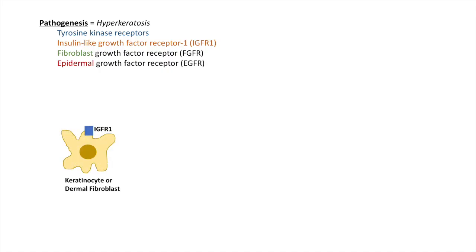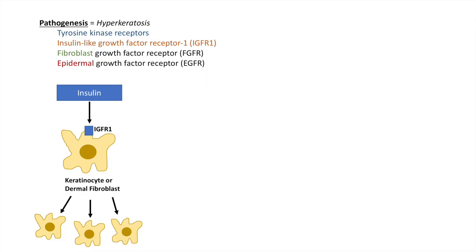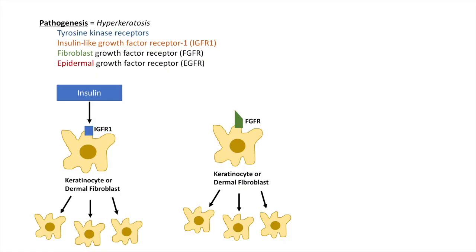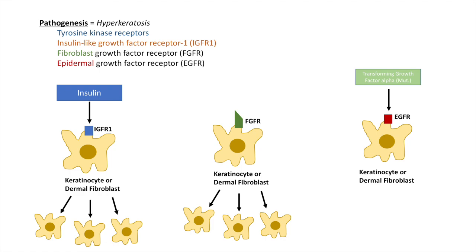In insulin-like growth factor receptor signaling, any increase or misutilization of insulin can activate insulin-like growth factor receptor 1, leading to a proliferation of keratinocytes or dermal fibroblasts, leading to hyperkeratosis. With fibroblast growth factor receptor signaling, there can be a mutation in the receptor leading to hyperactivation and again proliferation of keratinocytes or dermal fibroblasts. With epidermal growth factor receptor signaling, any mutation in transforming growth factor alpha — a ligand that binds to the epidermal growth factor receptor — can also cause hyperactivation of the signaling pathway, leading to proliferation of keratinocytes or dermal fibroblasts, all of which lead to hyperkeratosis.